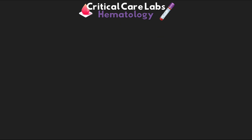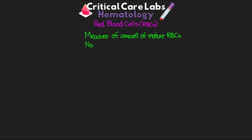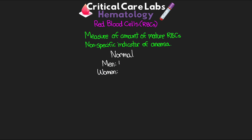Now we're going to move on and talk about our red blood cells, or RBCs. This is a measure of the amount of mature red blood cells we have in our blood. Just like hemoglobin, this serves as a nonspecific indicator of anemia. And just like the last two, the normal values differ between men and women. For men, the normal value is going to be 4.5 to 6 million cells per millimeter cubed, and for women, 4 to 5.5 million cells per millimeter cubed.